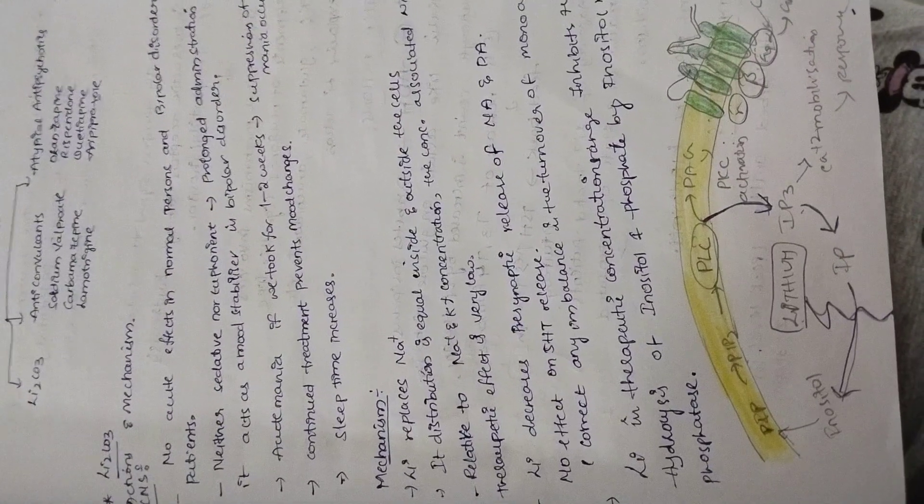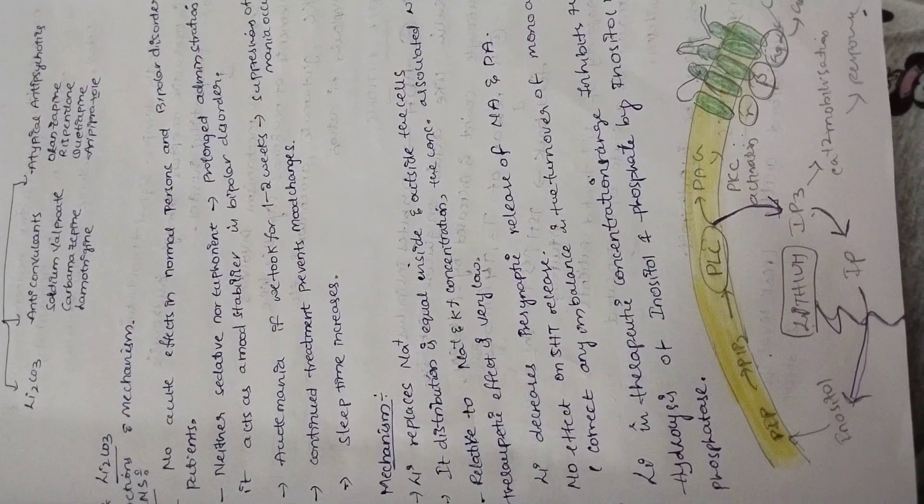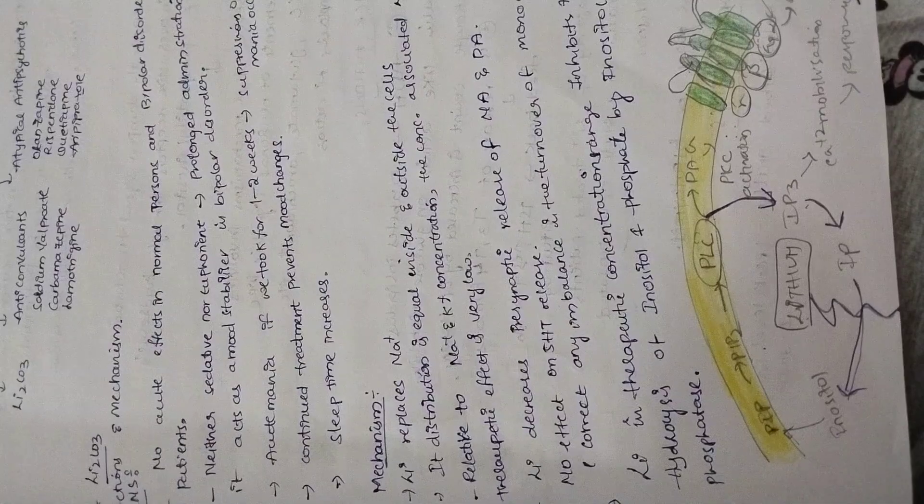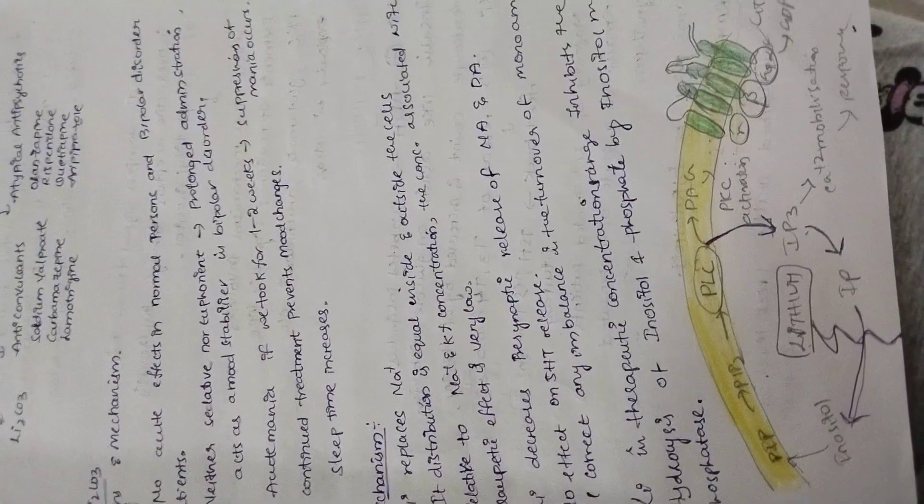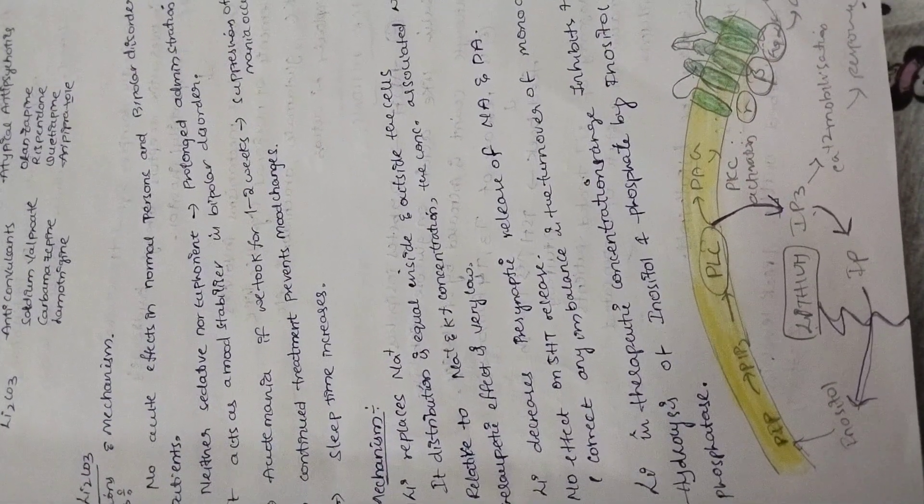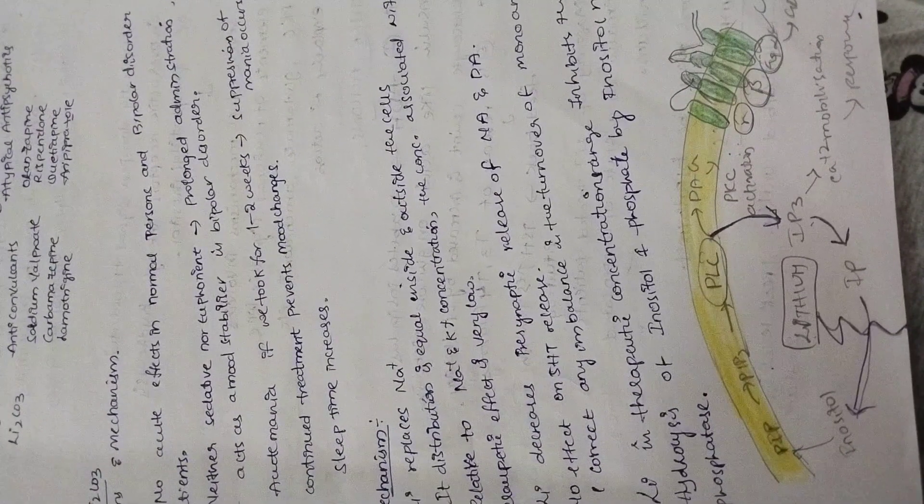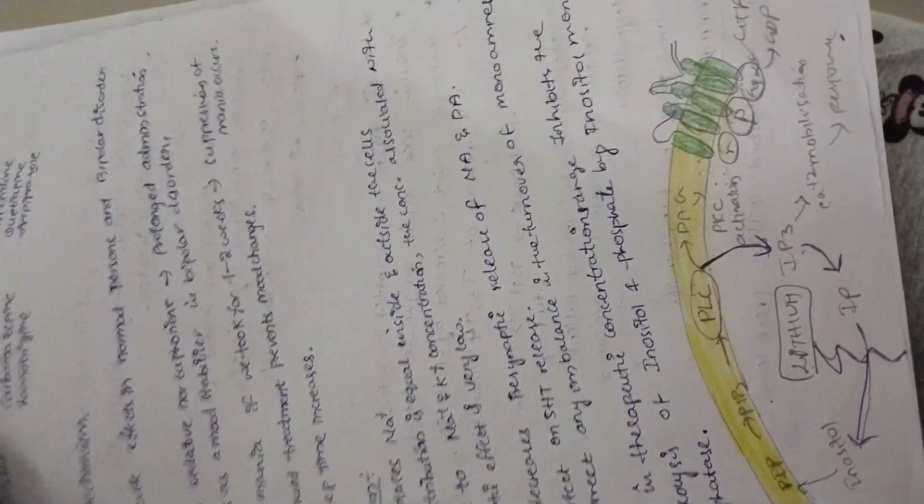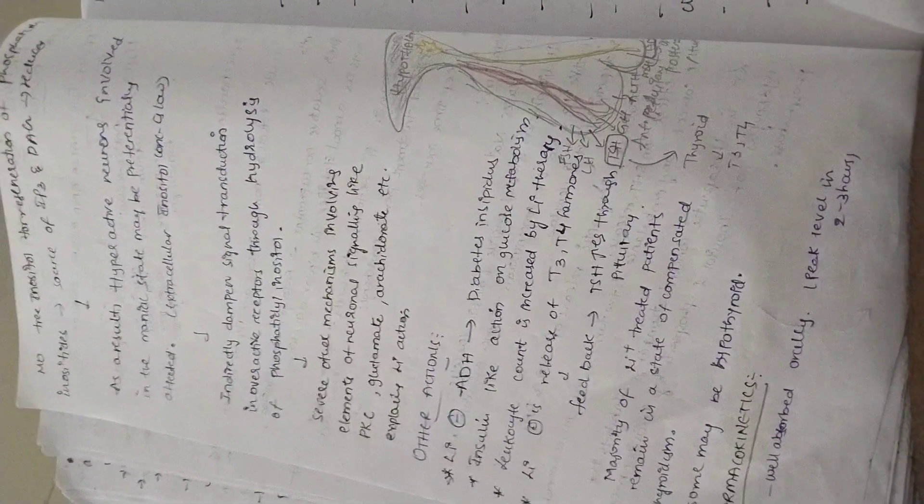Here we see in the diagram, IP3 is converting into IP and IP undergoes hydrolysis. Inositol phosphate undergoes hydrolysis in presence of inositol 1-phosphatase to form inositol. Inositol will be recycled to form diacylglycerol and inositol triphosphate. Lithium inhibits the hydrolysis of IP3, so there is no free inositol. Inositol is required for hyperactivity of neurons for energy purposes. Without inositol, there is no regeneration of DAG and IP3.